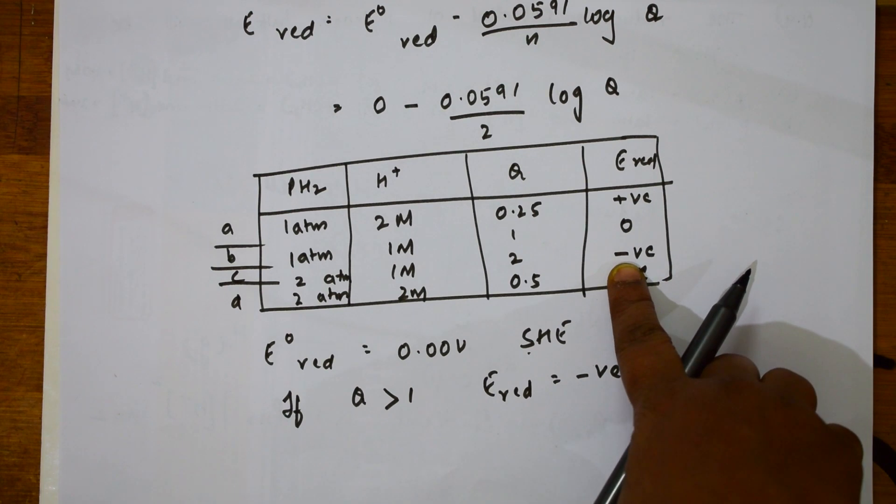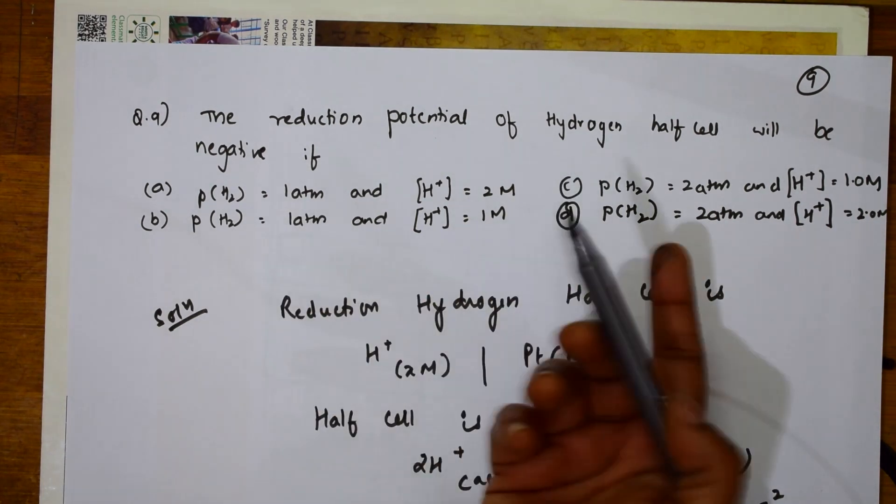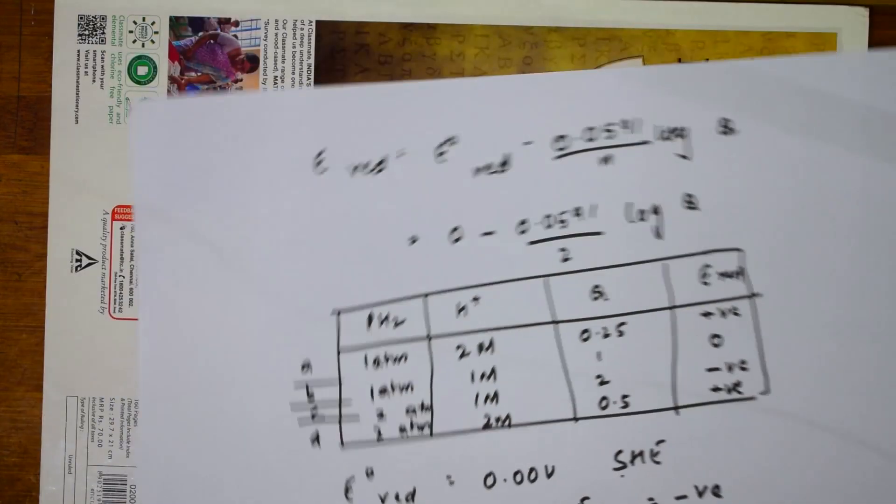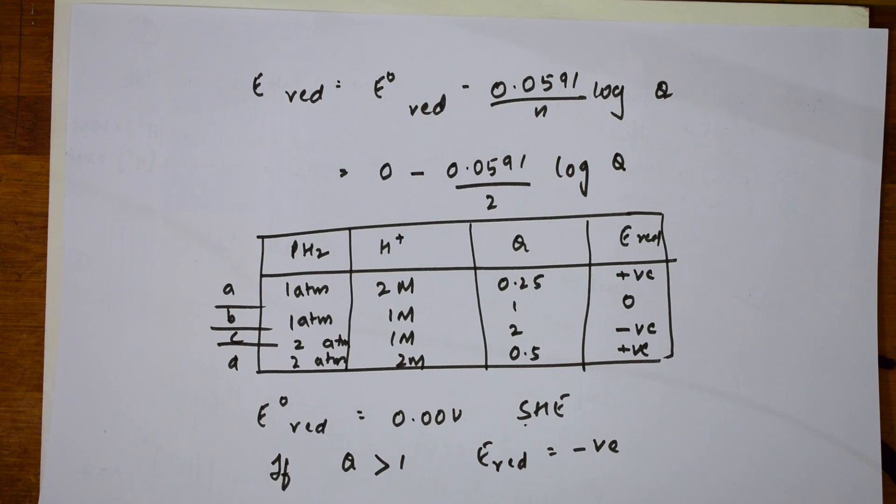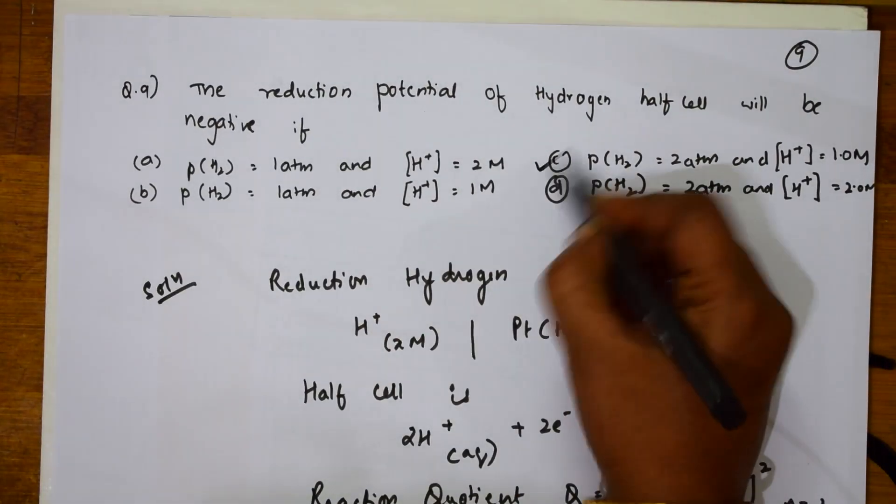This is negative. So now, we are going to conclude the correct value for the reduction potential. The half cell will be negative for what they asked me. That's solved using this procedure. I have got an answer negative for C. So the correct option for you is C.